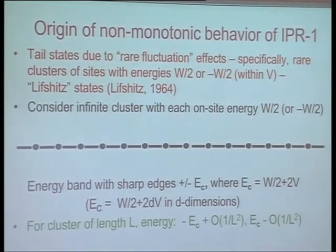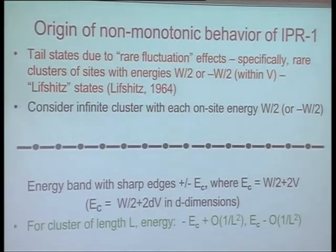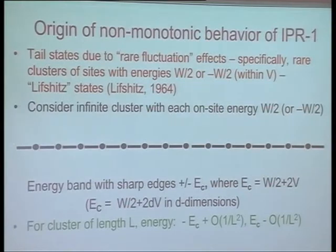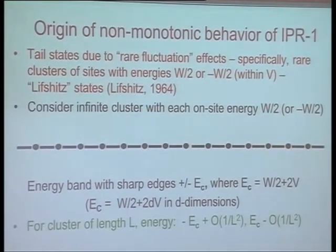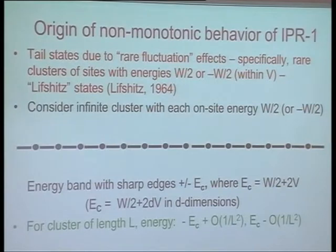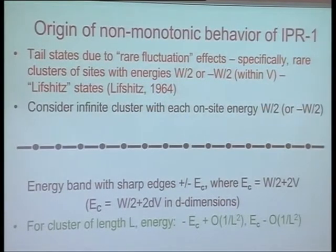One question is: what's this non-monotonic behavior of the inverse participation ratio? Why did it go up and then go down? It turns out that the tail states are due to rare fluctuation effects. Specifically, if you have a cluster of sites in which each of the diagonal energies happen to be at the edge of the distribution — W/2 or minus W/2 — and within a bond which is equal to V, then you end up with a situation where the energy of the system can actually go outside W/2.